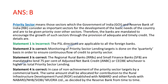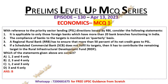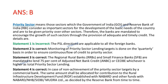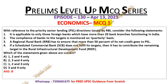Statement 2 is correct because monitoring of priority sector lending targets is done on a quarterly basis to ensure continuous flow of credit to the priority sector. Statement 3 is correct because regional rural banks and small finance banks are mandated to lend 75% of adjusted net bank credit or CEOBE, whichever is higher, as total priority sector lending. Statement 4 is correct because in case of non-achievement of PSL targets by a commercial bank, the same amount shall be allocated to the Rural Infrastructure Development Fund established with NABARD, and other funds with NABARD, NHB, SIDBI, and Mudra as decided by the Reserve Bank from time to time. That is why option B is correct.